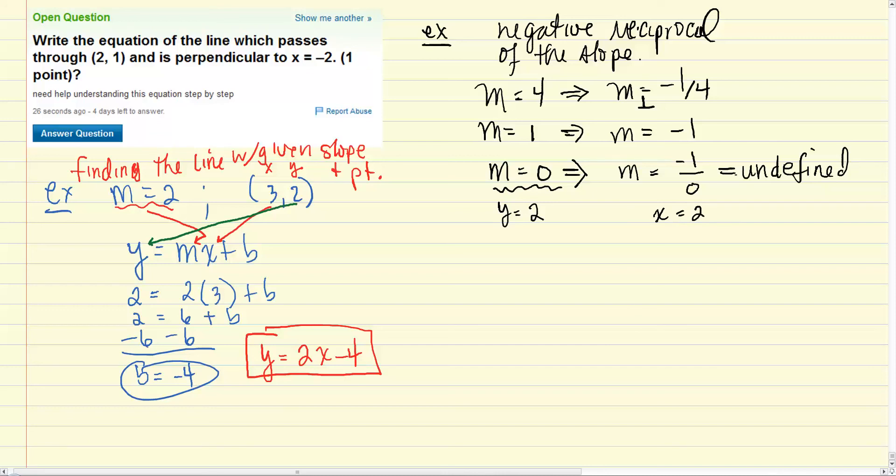Okay, those are the two things that we needed to have in place first. So now we have to find the equation of a line that passes through (2, 1) and is perpendicular to x equals negative 2. So in this case we know that the slope here is going to be m equals undefined, so we know that m perpendicular is going to be 0.